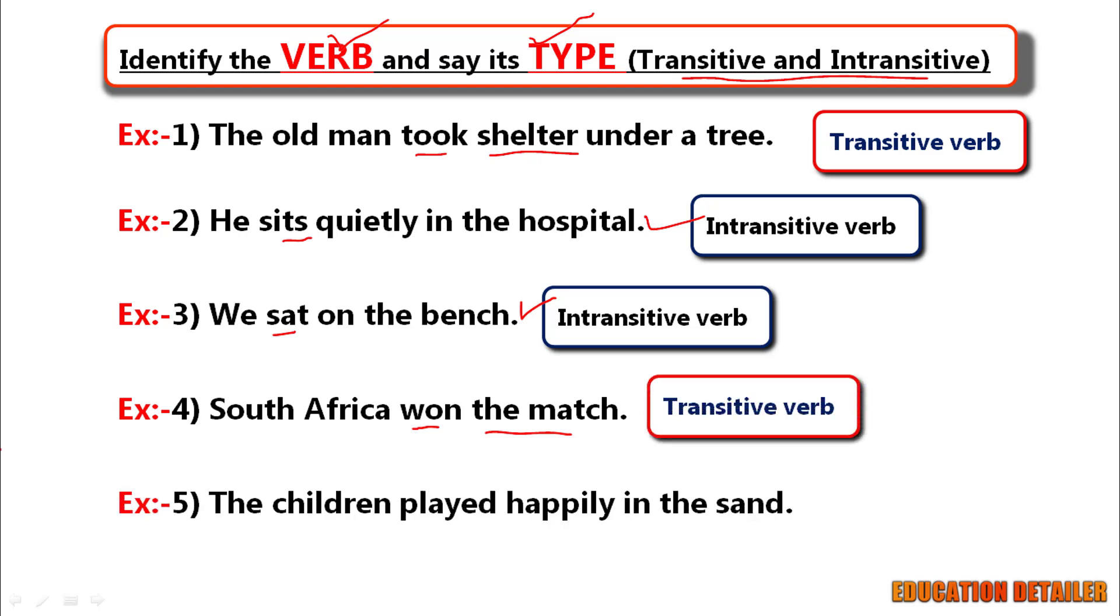And the last one. The children played happily in the sand. Here there is no object to receive an action of the verb play. So here it is an intransitive verb.